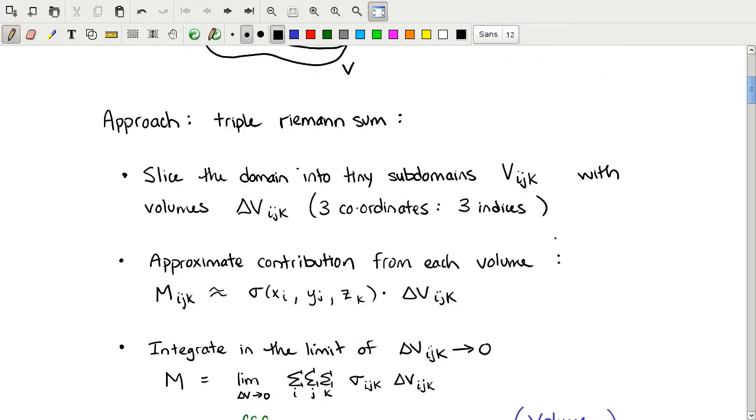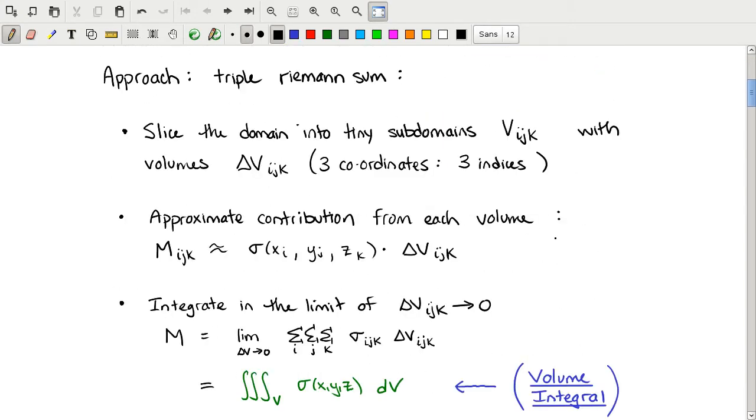The approach we'll use to compute this quantity will be a Riemann sum, as with all other integrals we've done. The idea is that we slice a domain—any domain—into tiny subdomains, each of which has a volume. We call those subvolumes delta v_i,j,k. Since there's three coordinates now, a three-dimensional object, triple integral, is going to have three indices.